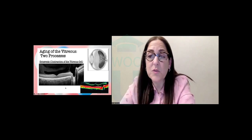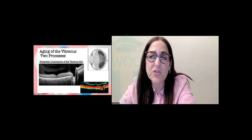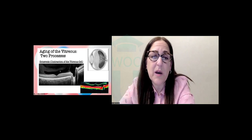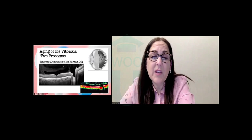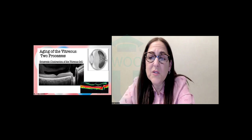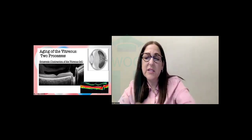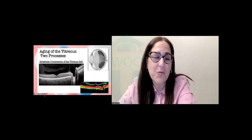The other thing that happens as a result of aging is syneresis, or the anterior contraction of the vitreous. On the OCT you can appreciate how the posterior hyaloid — the most posterior aspect of the vitreous body — is really just migrating forward anteriorly on the scan. There are also areas of liquefaction within this vitreous body. These are normal age-related changes that everybody who lives long enough will have.